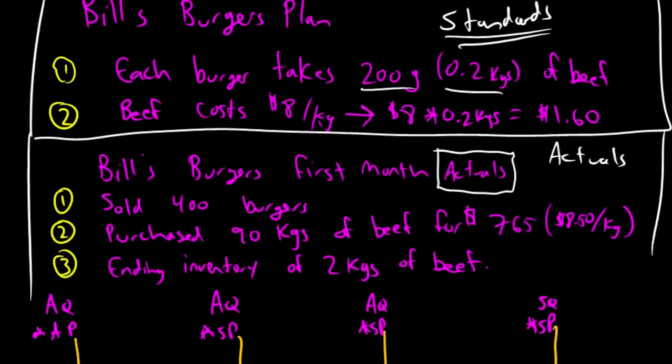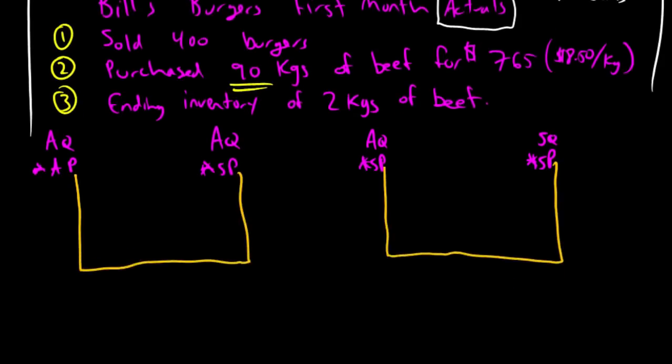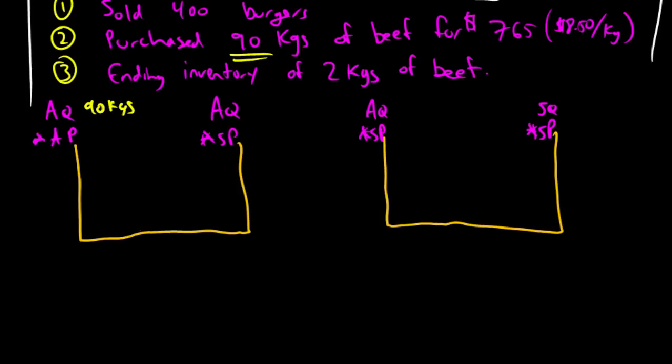AQ is Bill's actual quantity of materials purchased. So, he purchased 90 kilograms of beef. That's his AQ. So, AQ is 90 kilograms. I can fill it in here, too. Oh, I should note. The left prong is for direct materials purchased. The right prong is for direct materials used. I almost filled in the right prong as 90 kilograms, but of course, we used a different amount from what we purchased. So, we purchased 90 kilograms. Our actual price we paid was $8.50 per kilogram. So, if I multiply them through, you'll find I paid $765 for my direct materials that I purchased.